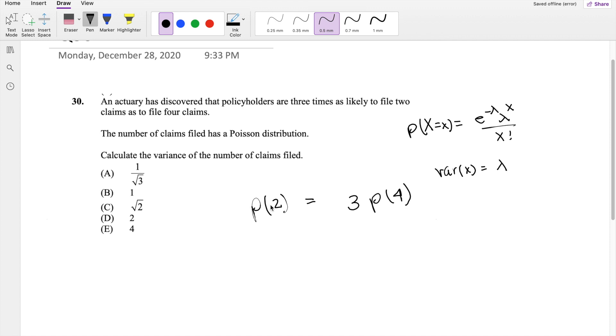So if probability that X equals two, that's equal to e to the negative lambda, lambda to the two over two factorial, is equal to three times e to the negative lambda, lambda to the four over four factorial.